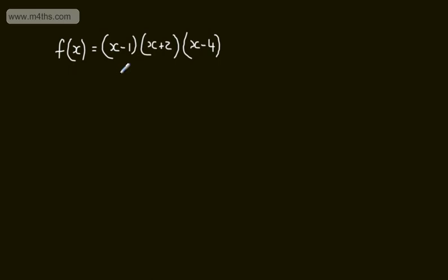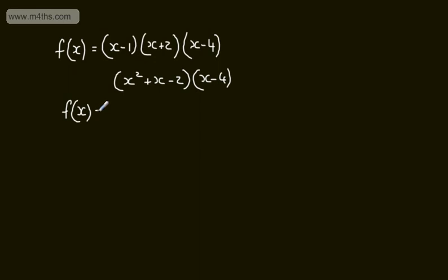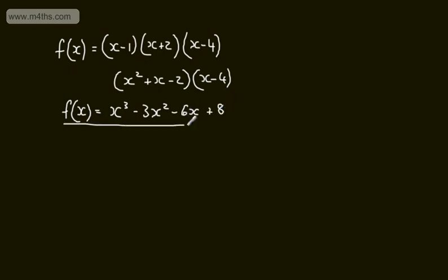Expanding the first two brackets gives x squared plus x minus 2, and then we multiply that by x minus 4. So f(x) equals x cubed. For the x squared terms, we have minus 4x squared plus x squared, which is minus 3x squared. For terms in x, we have minus 4x minus 2x, which is minus 6x. Finally, minus 2 times minus 4 gives plus 8 as the constant.